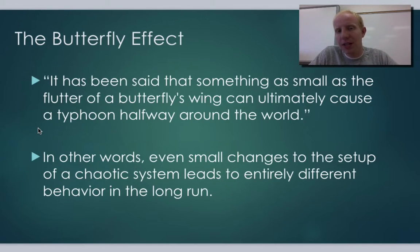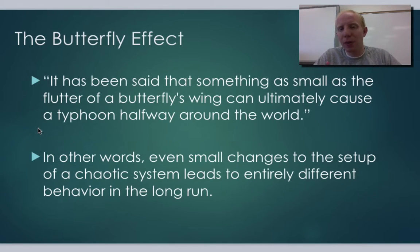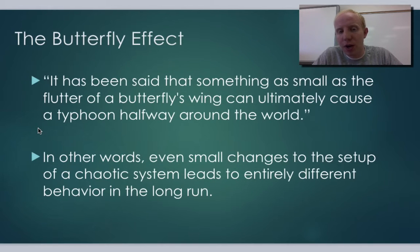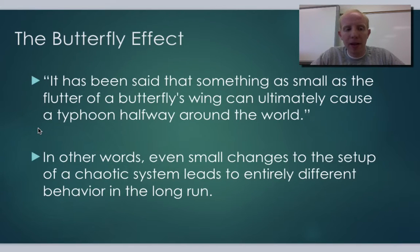That's why it appears to be chaotic — that's why we call it chaotic. It's not because we can't predict it. Our predictions are usually pretty accurate based on what we do have, but the longer we run the prediction, the more inaccurate we are.